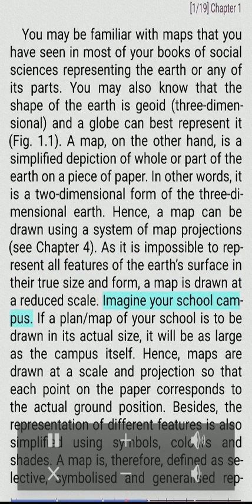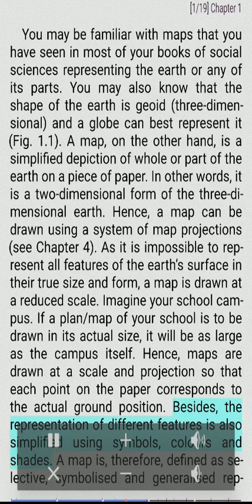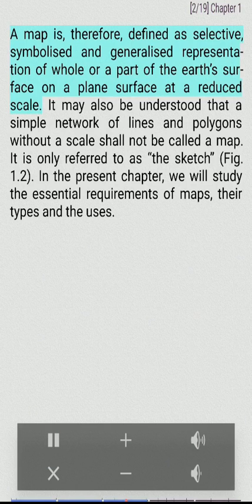Imagine your school campus. If a plan or map of your school is to be drawn in its actual size, it will be as large as the campus itself. Hence, maps are drawn at a scale and projection so that each point on the paper corresponds to the actual ground position. Besides, the representation of different features is also simplified using symbols, colors and shades. A map is therefore defined as selective, symbolized and generalized representation of whole or a part of the Earth's surface on a plain surface at a reduced scale.